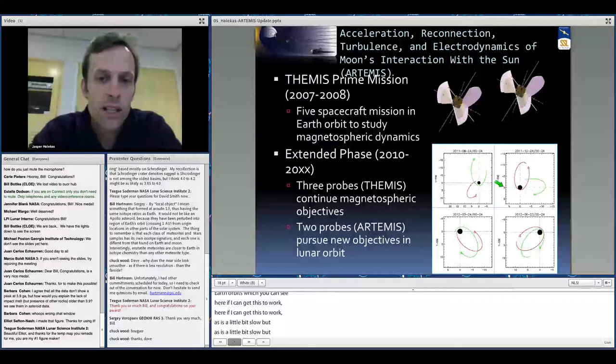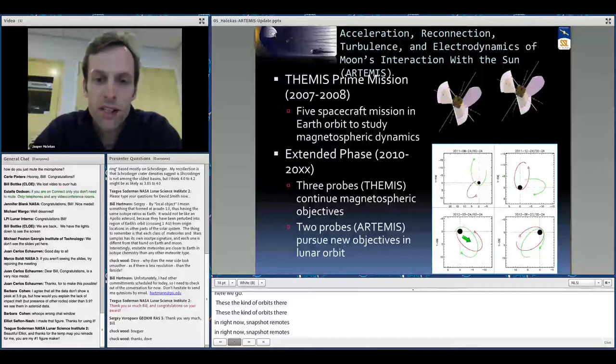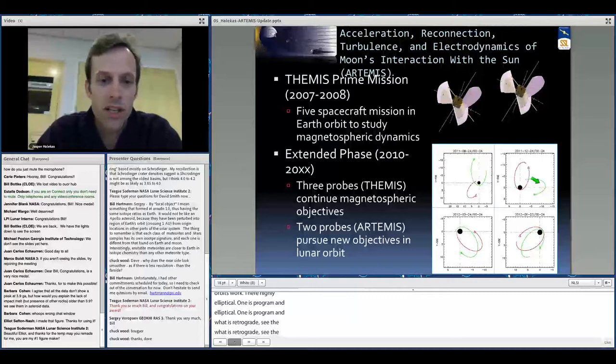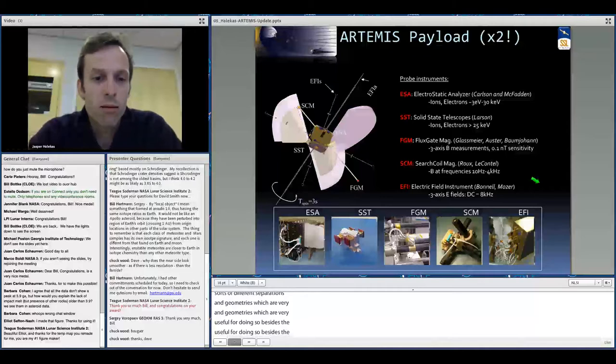These are just snapshots three months apart showing you how these orbits work. They're highly elliptical. One of them is prograde and one is retrograde, so you can see they precess around at different speeds and you get all sorts of interesting inter-spacecraft separations and geometries here, which are very useful for doing some of the science that we're doing.